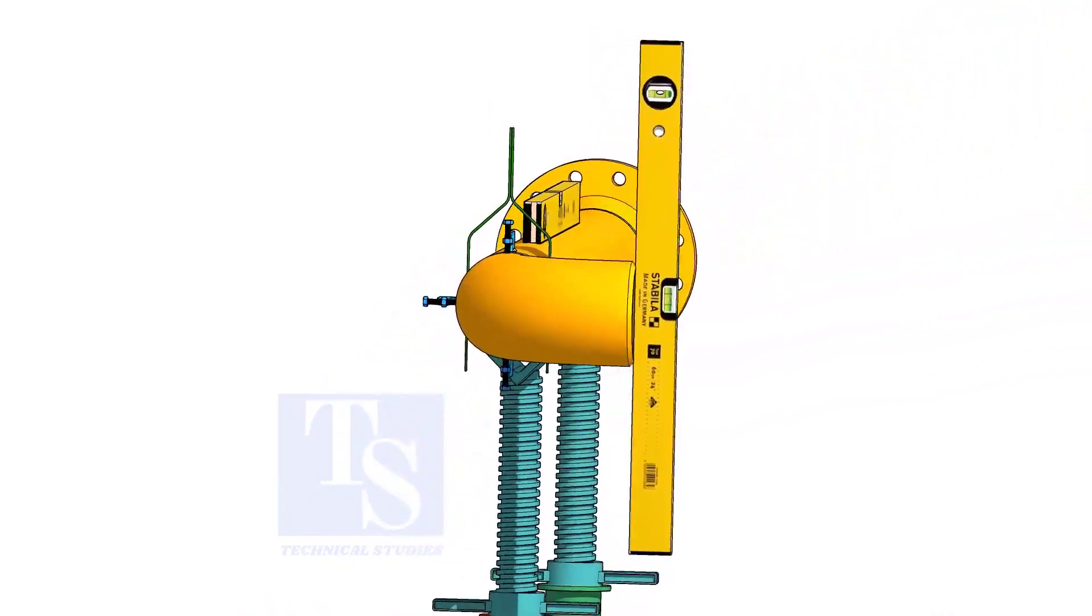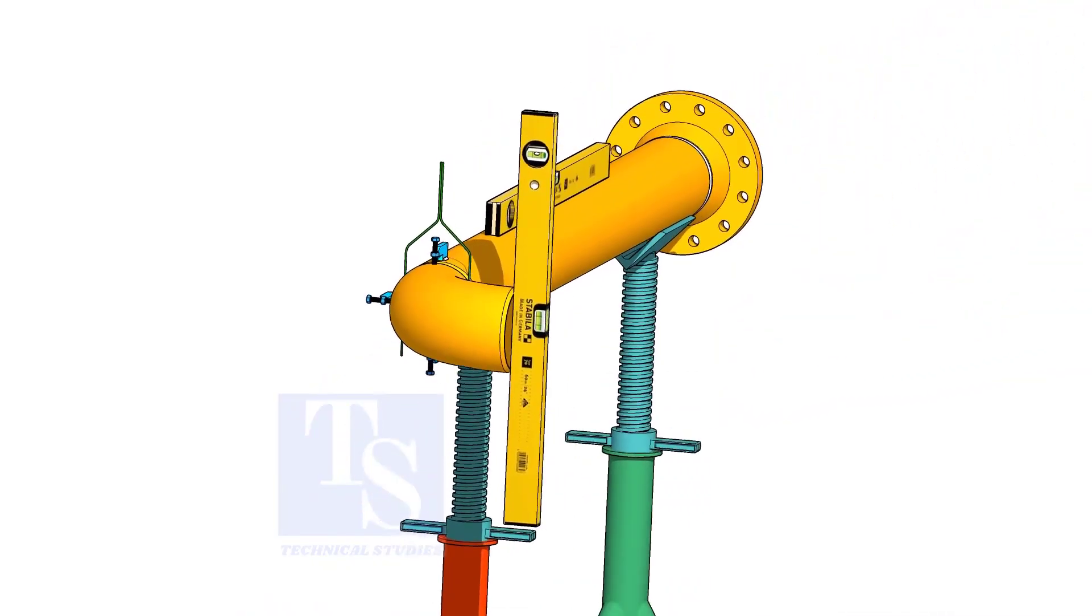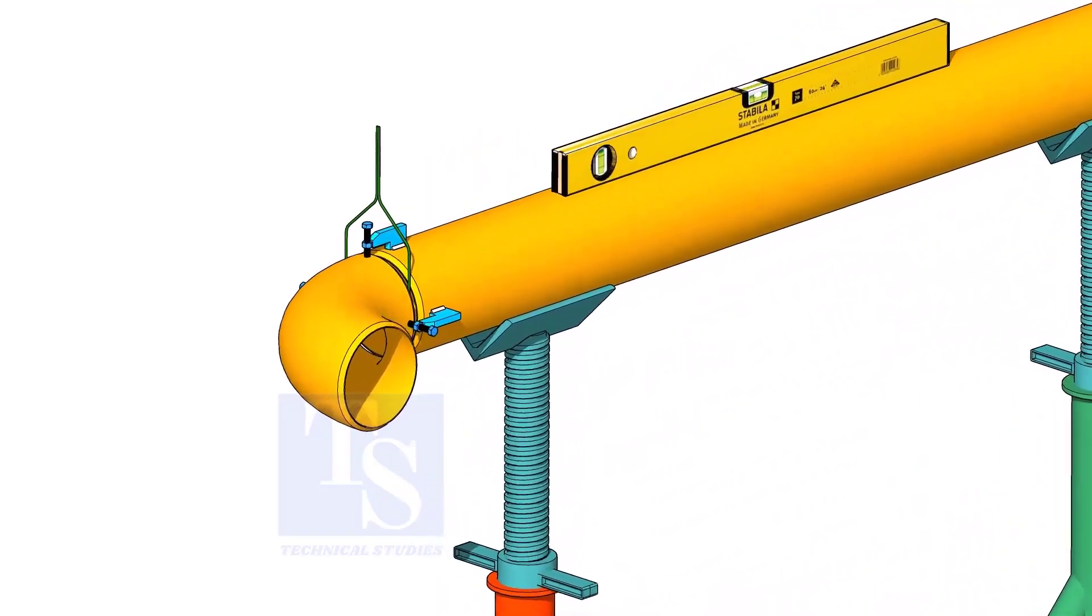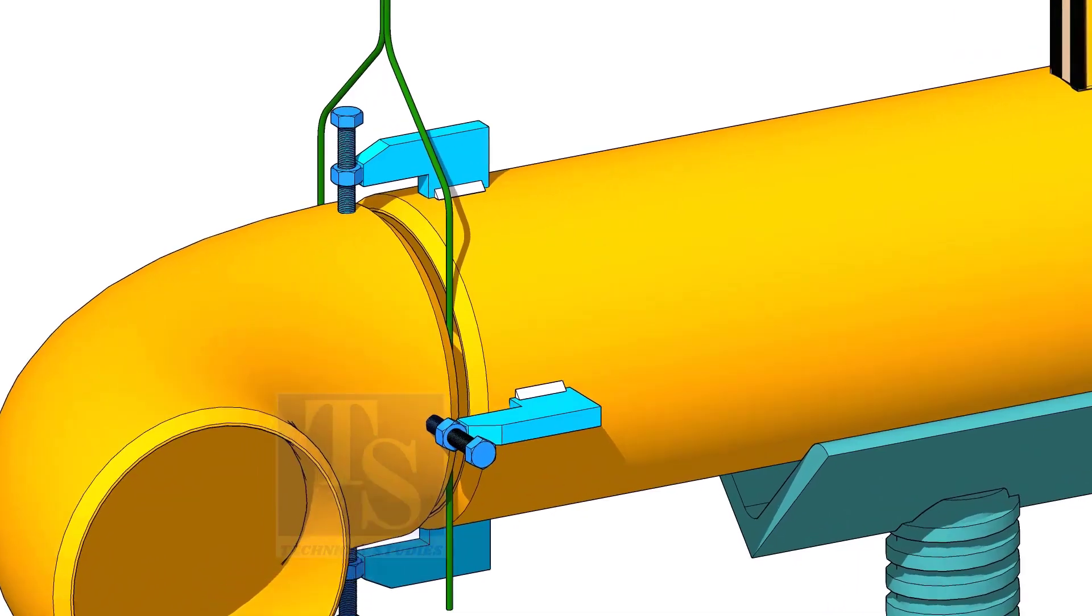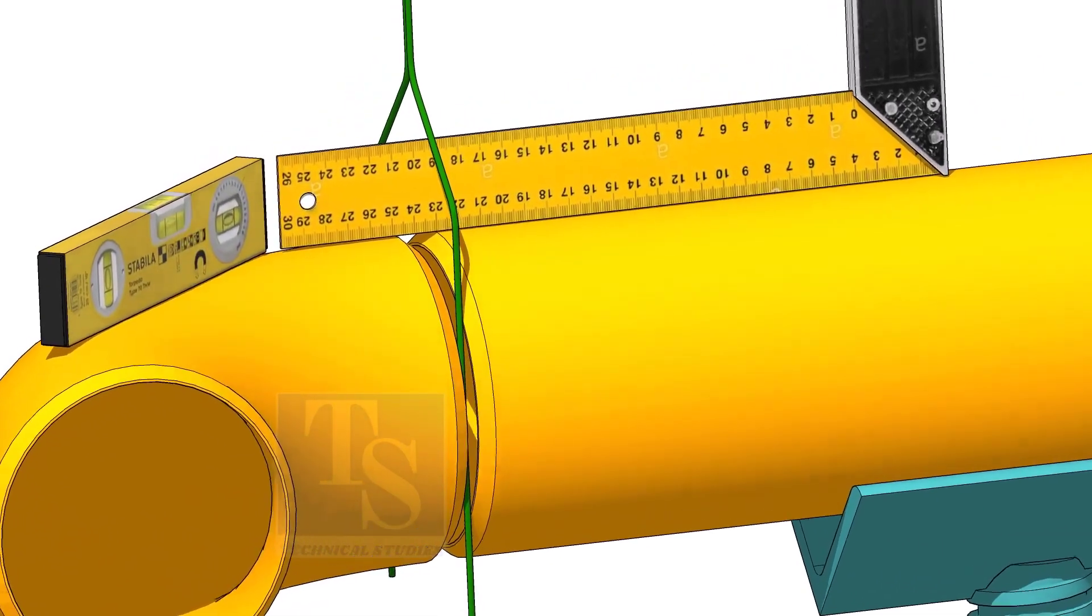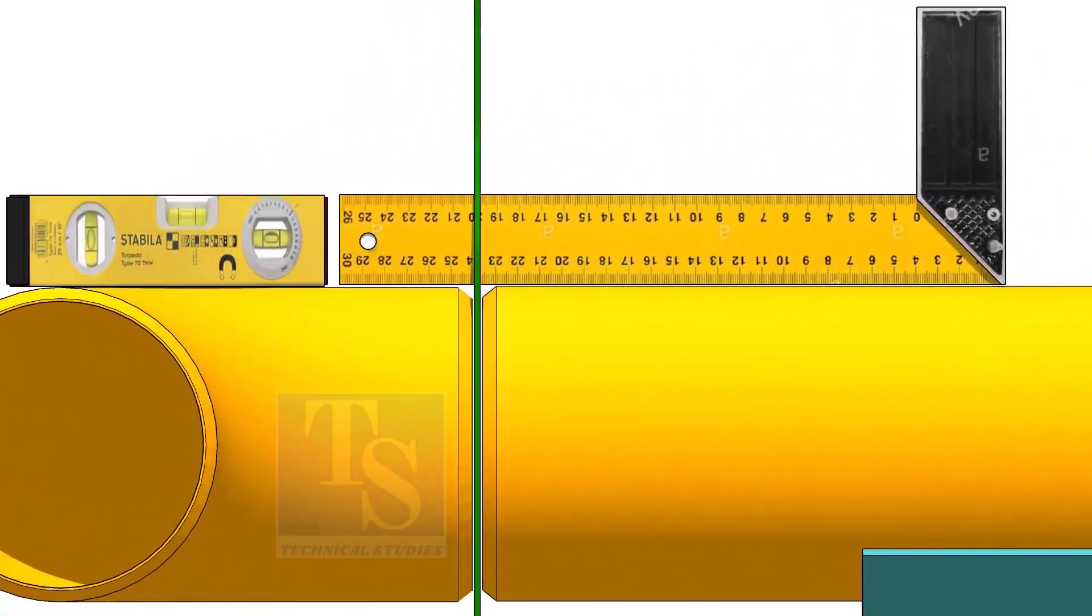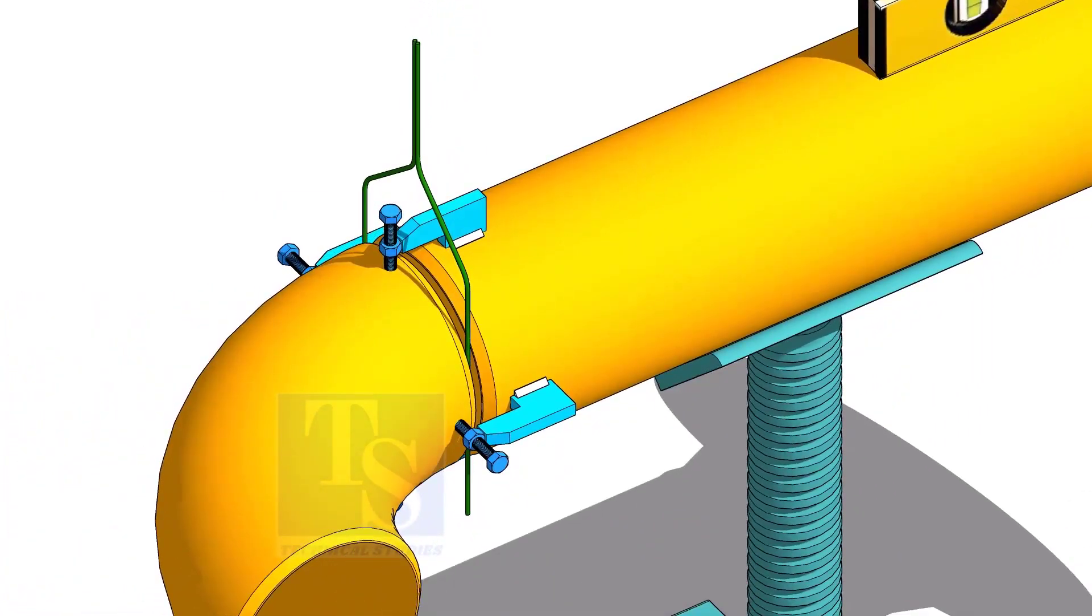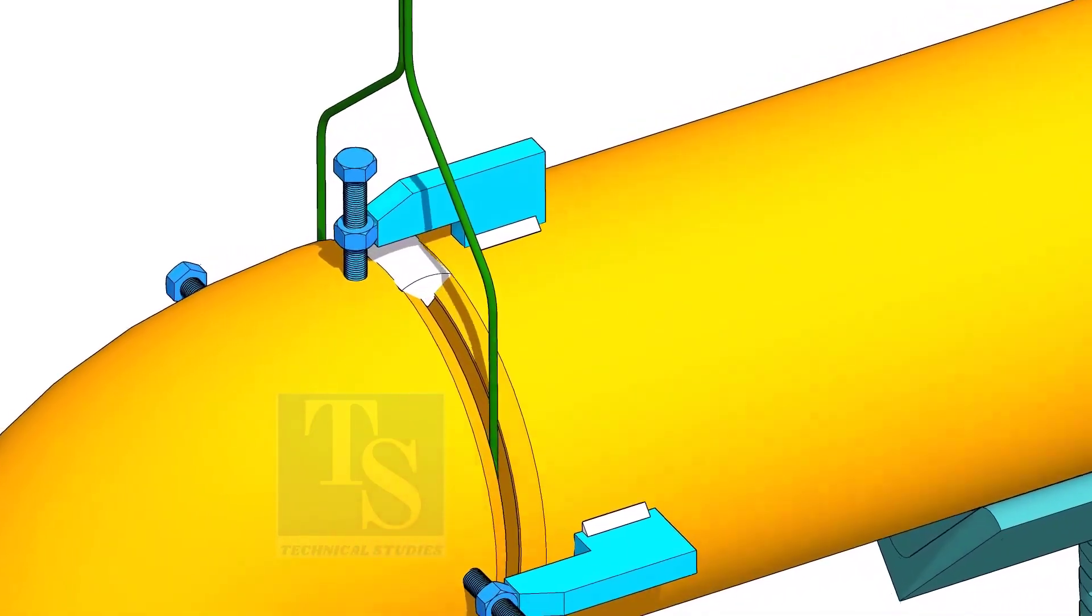Check the level of the elbow face. You can use either a level bottle or a plumb. Correct the overlap, then tack weld on the top of the joint.